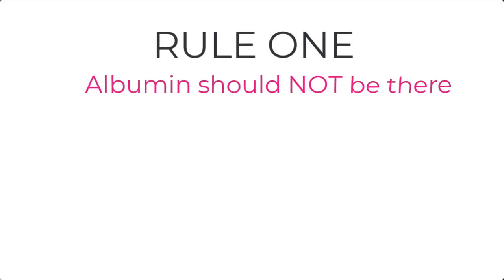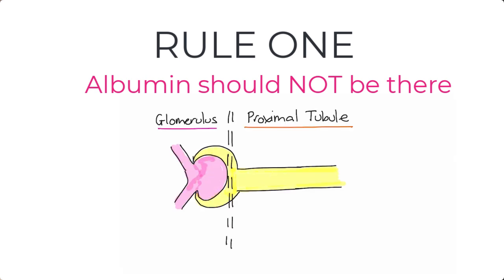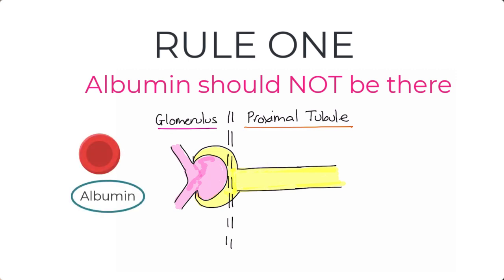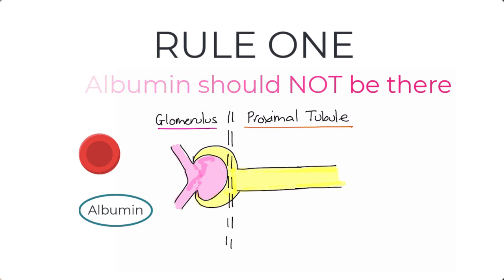Rule number one: there should be no albumin in the urine in health. Inside the glomerulus, you have the filtration barrier. This filtration barrier allows everything in your plasma to pass through into the tubules, except for two things — blood cells and large proteins like albumin. They're just too big to get through. So if you have a healthy glomerular filtration barrier, there should be absolutely no albumin in your urine.